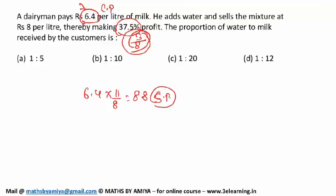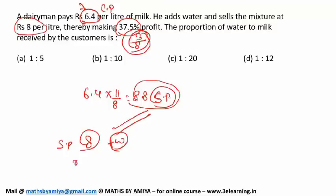But now he is selling it at 8 rupees. It means that both are equivalent if we add the water. This is milk to water and you are increasing 0.8 as water and whole as 8. This ratio is also 1 by 10.